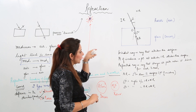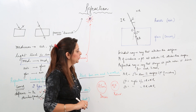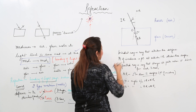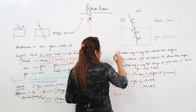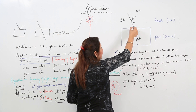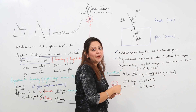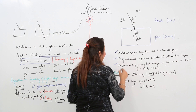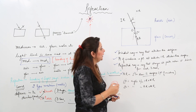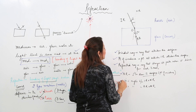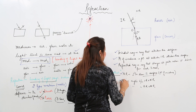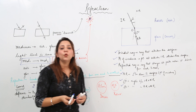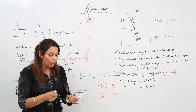So to summarize the terminology: the incident ray is the ray that strikes the surface; the point of incidence is where it strikes; the refracted ray is the ray that bends due to difference in densities of media; the normal is the perpendicular drawn to the surface; the angle between incident ray and normal is angle of incidence; the angle between refracted ray and normal is angle of refraction.